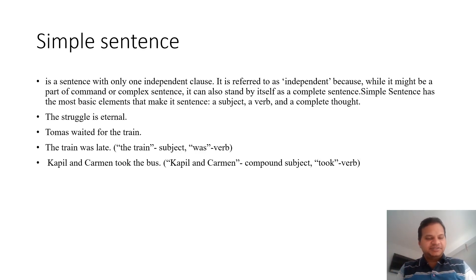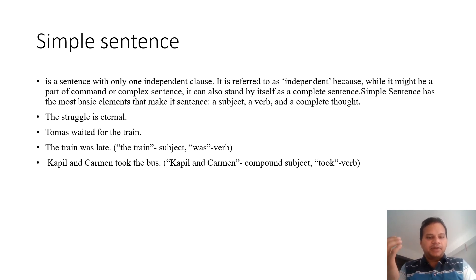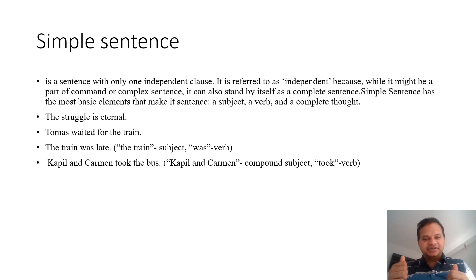First is the simple sentence. It is a sentence with only one independent clause. It is referred to as independent because while it might be part of a compound or complex sentence, it can also stand by itself. A simple sentence has the most basic elements that make it a sentence — it contains a subject, a verb, and a complete thought.